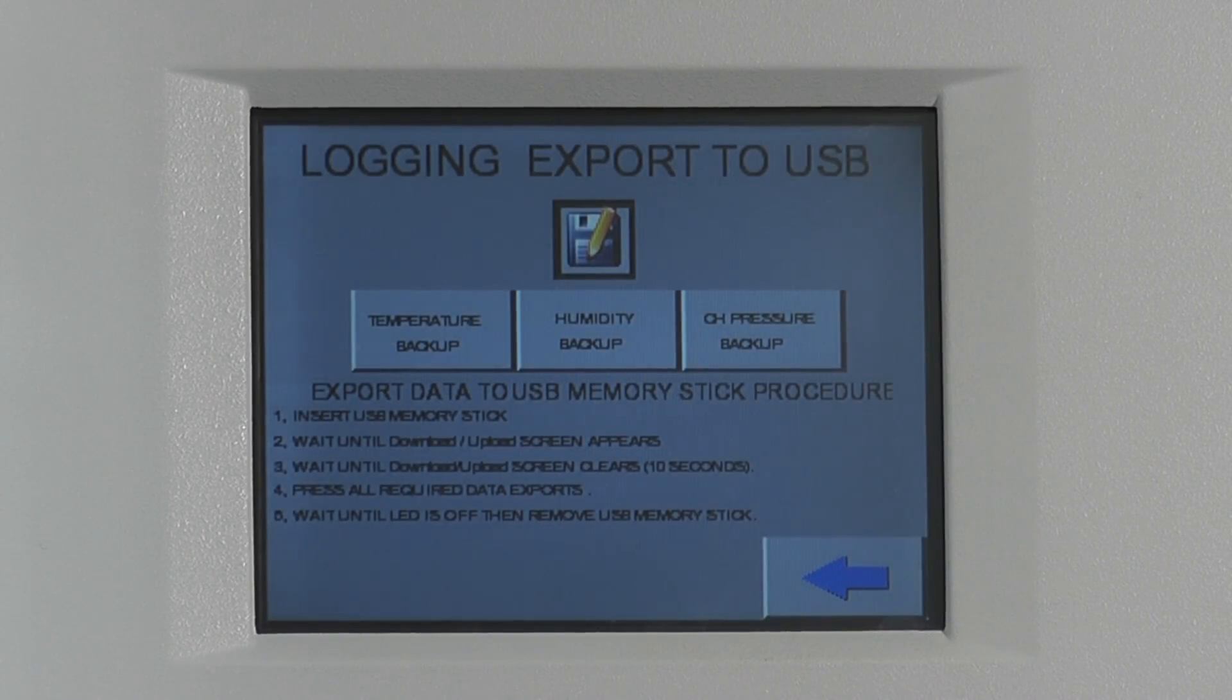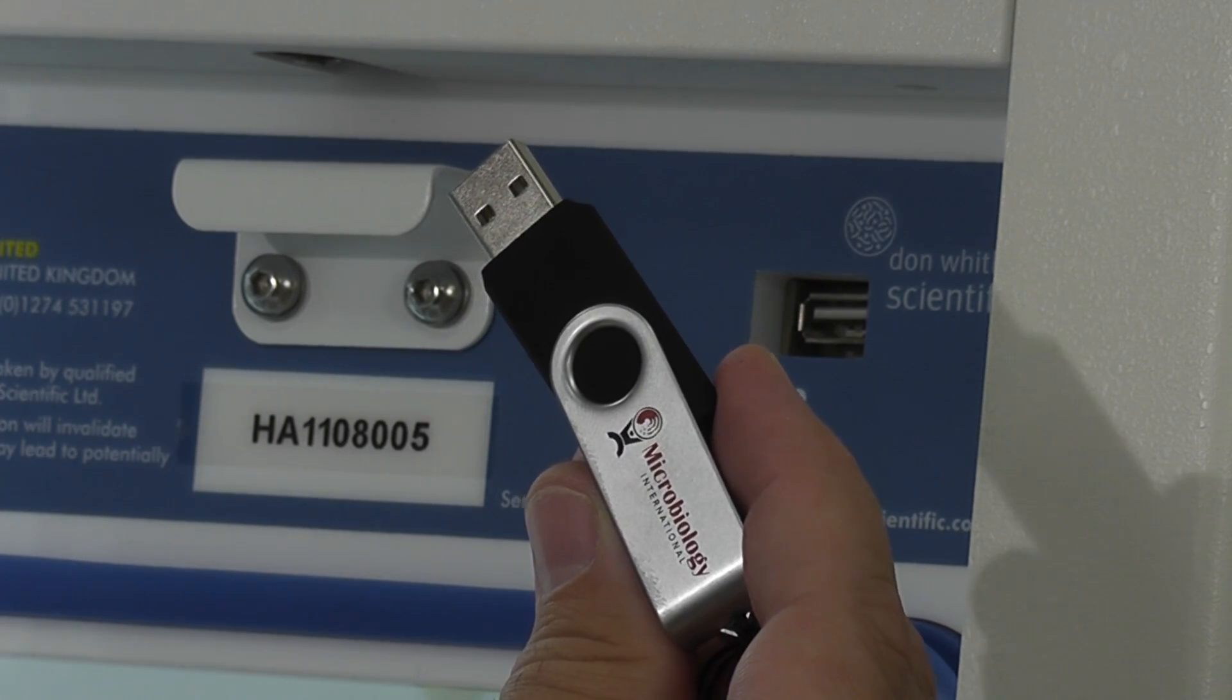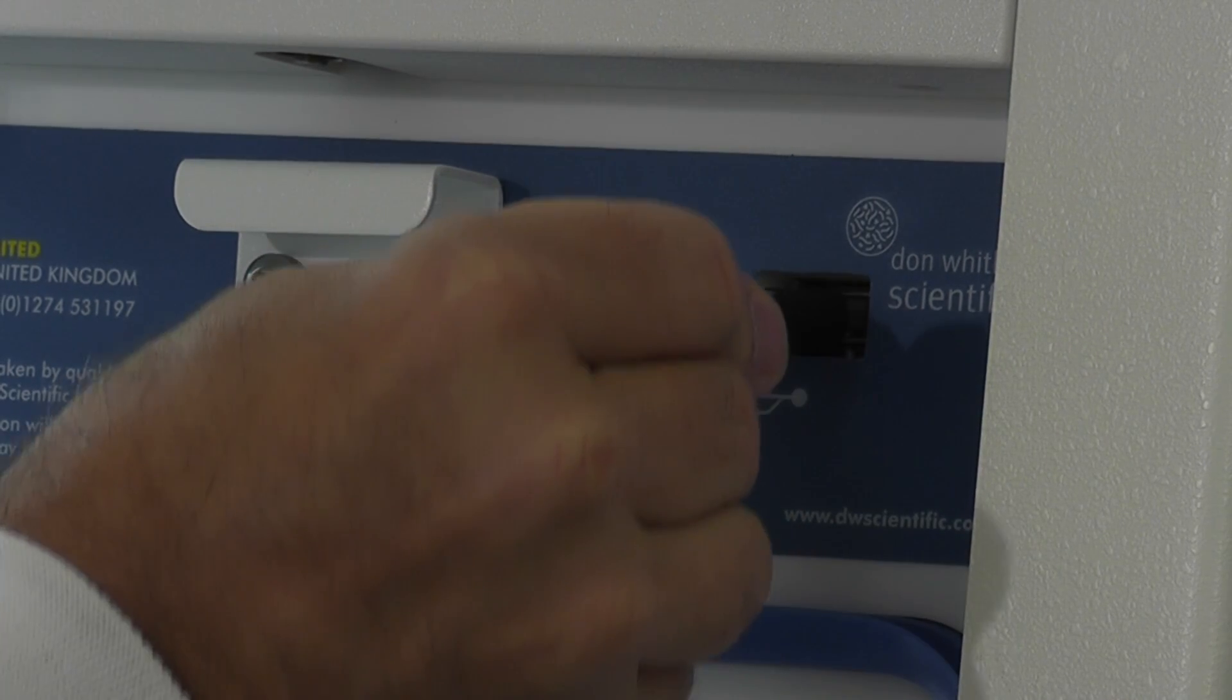You can easily download stored temperature, humidity, and internal pressure parameters over the last 30 days via any standard USB flash drive.